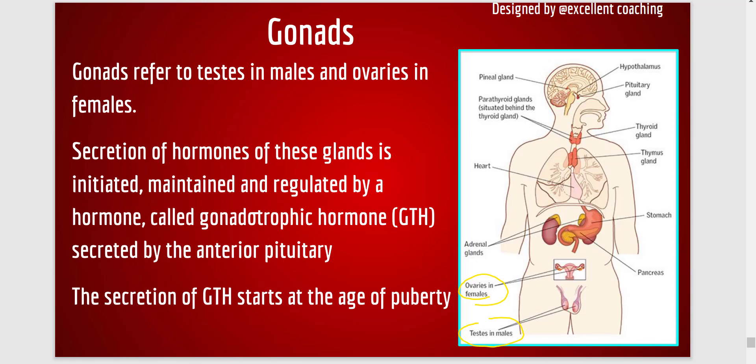Here you can see both of them shown — ovaries in females and testes in males. When the anterior pituitary releases a hormone called gonadotropic hormone (GTH), this GTH goes towards the gonads and stimulates them to release their respective hormones. It is important to remember that GTH only starts releasing after the age of 10 years, that is 10 to 14 years, which is the age of puberty.